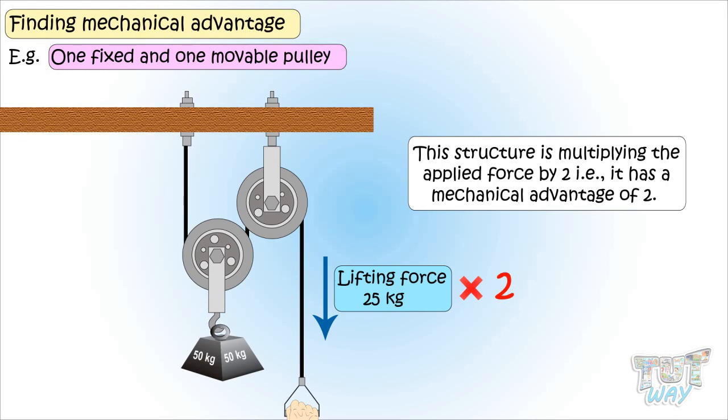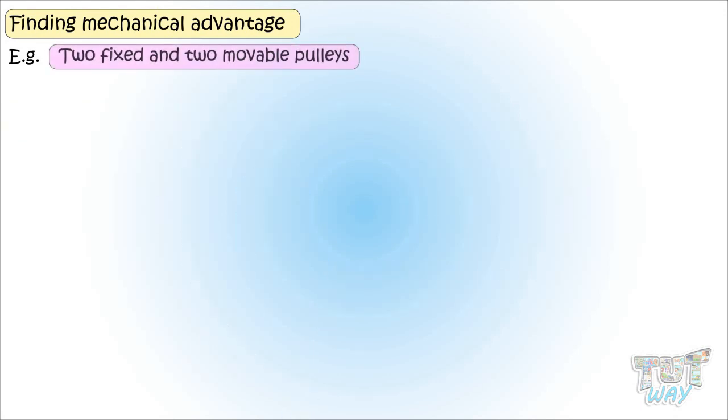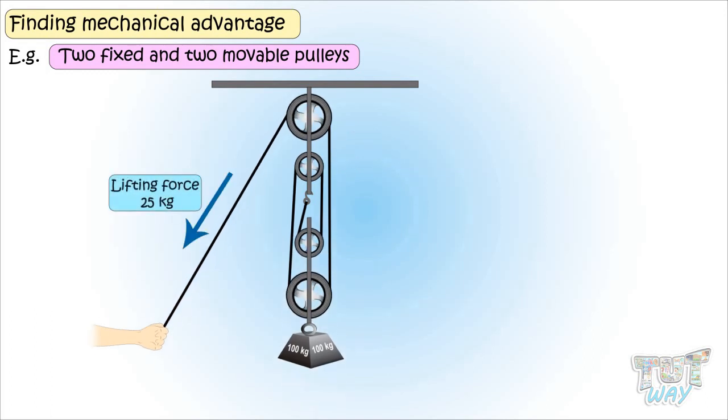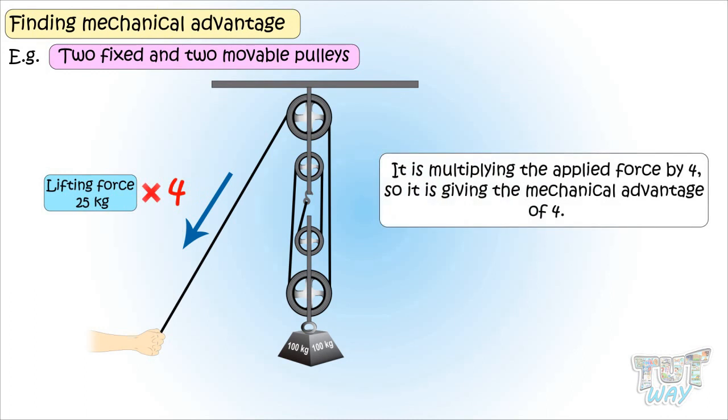Now, here we have next an example. It is two fixed and two movable pulleys. This is a compound pulley set up. Two fixed pulley wheels are attached to the fixed support. And two movable ones are attached to the weight. This set up would take 25 kg effort to lift the weight of 100 kg. That is, it is multiplying the applied force by 4. So, it is giving the mechanical advantage of 4.